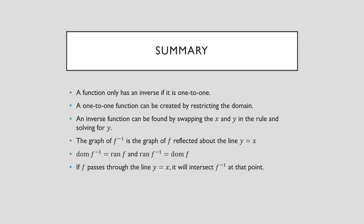Now, if your function and your inverse are going to intersect, they will do so somewhere along the line y equals x. If the original function does not intersect with this line y equals x, then it will not intersect your inverse function at all — they'll be completely separate from each other. All right, so that's it. That's our inverse function done. Hopefully you can go away now and sort of work on these inverse functions yourself. Review the video, make sure you understand all the points that were being made, and I will see you next time.